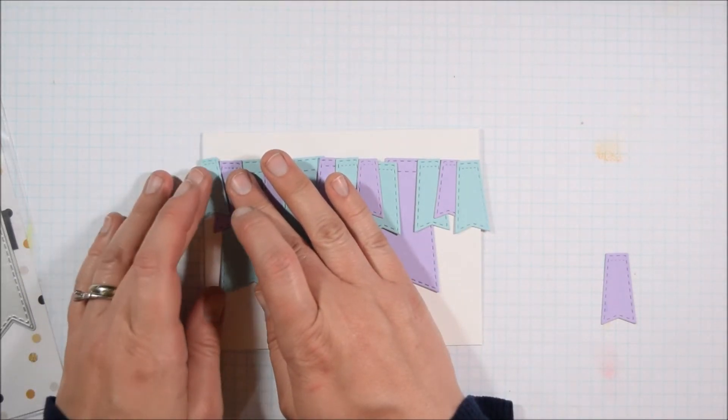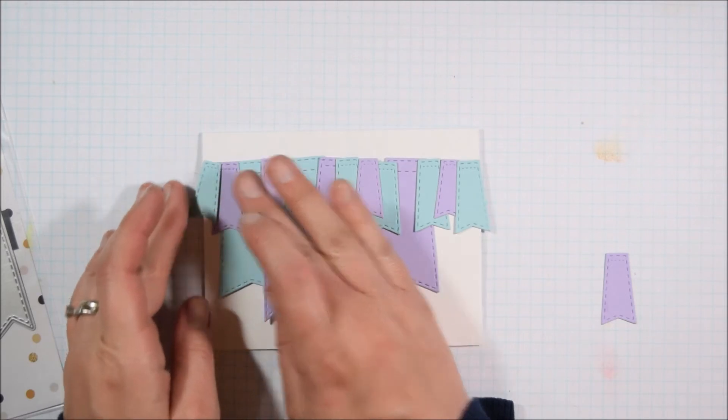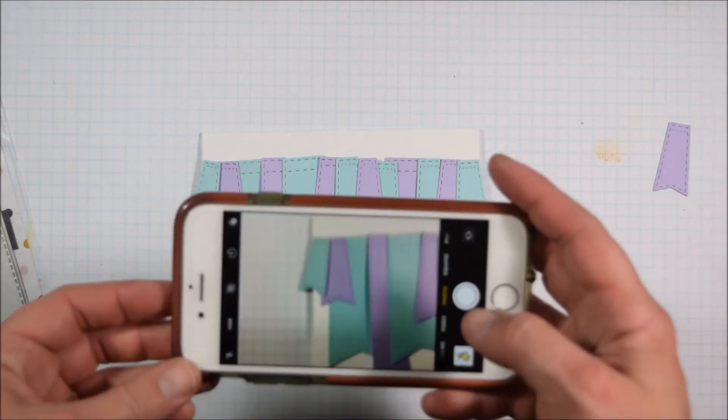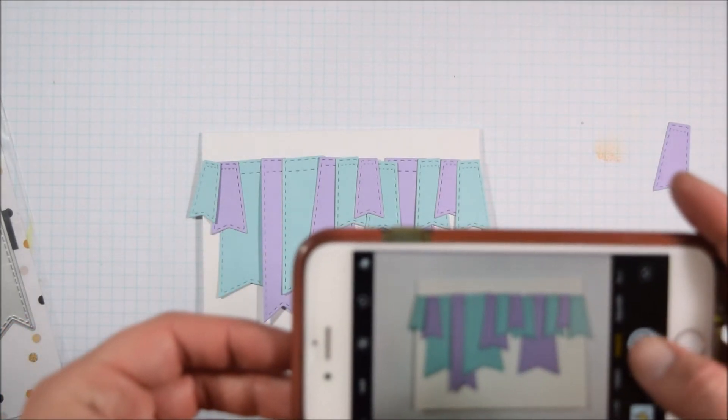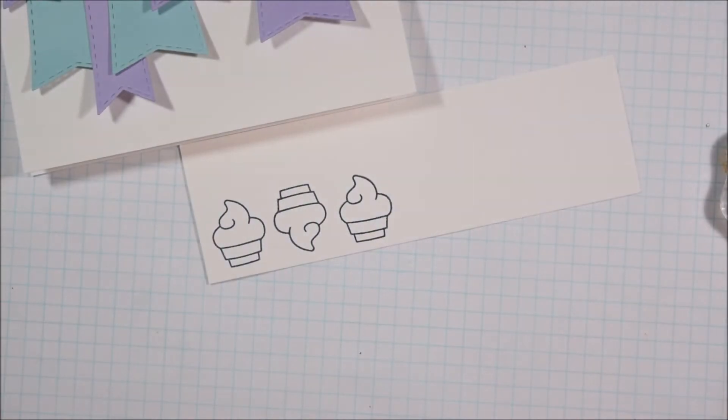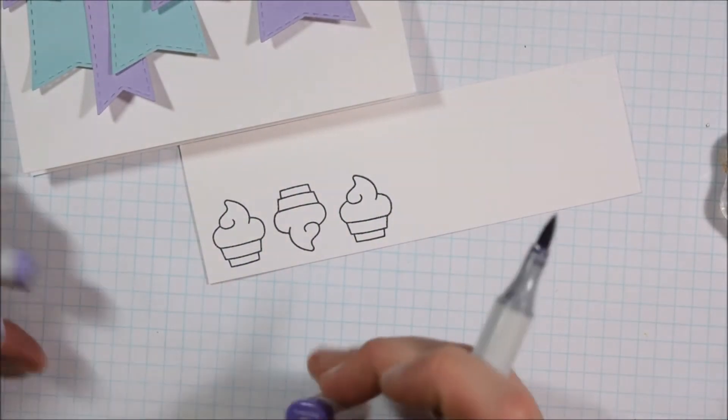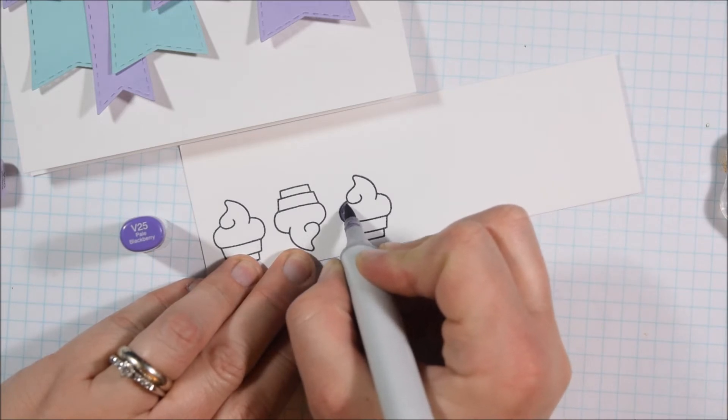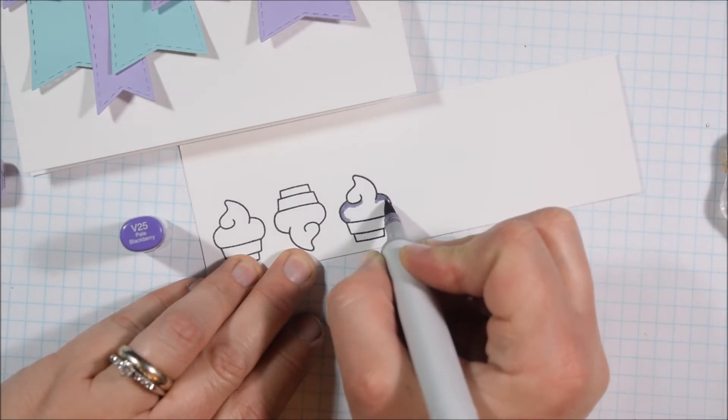I'm changing up whether or not they are overlapping each other. So instead of them all being like the next one goes on top of the previous one, sometimes I'm letting two of them go behind the middle one or something like that, and that's just to add interest and not make it look so flat. Then once I have it the way I like it, I'm going to take a picture of it with my phone so that way I remember what it looks like when I add the adhesive.